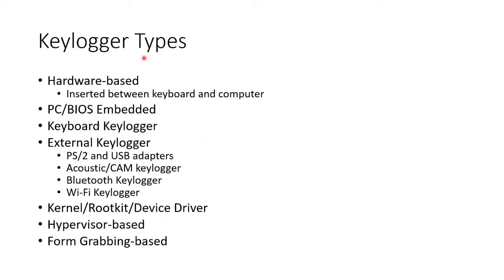Now, there are all sorts of keylogger types. The most common ones are just the hardware ones that go between the keyboard and the computer. You can also, in some cases, install a keylogger that works at the BIOS level — at the motherboard level of the PC. You can also have a malicious keyboard that does the keylogging. There are other kinds of keyloggers you can plug in that are not necessarily between the keyboard and computer, but they are capturing nonetheless.